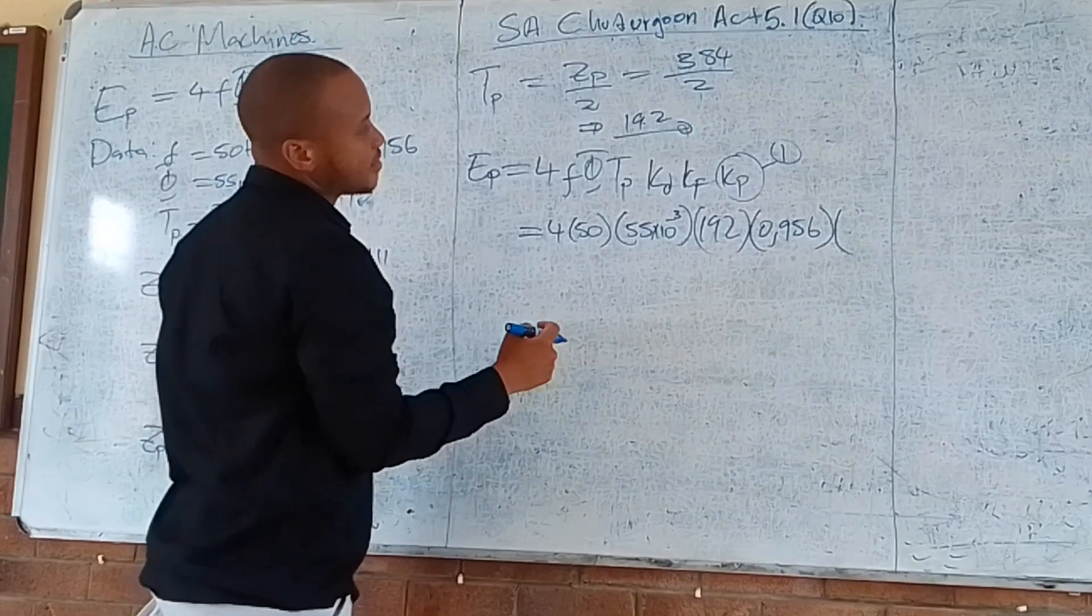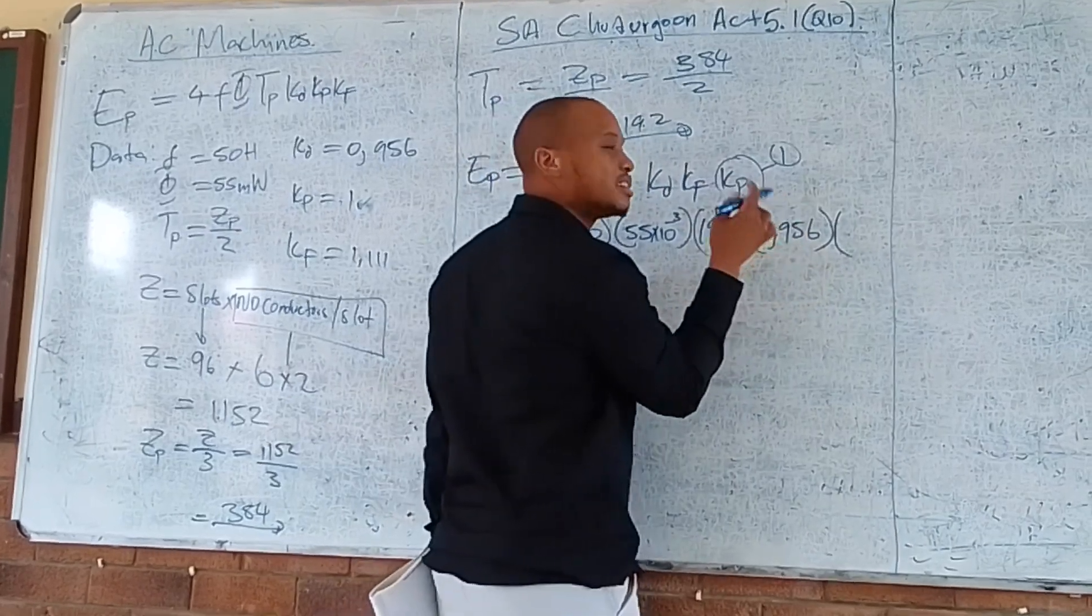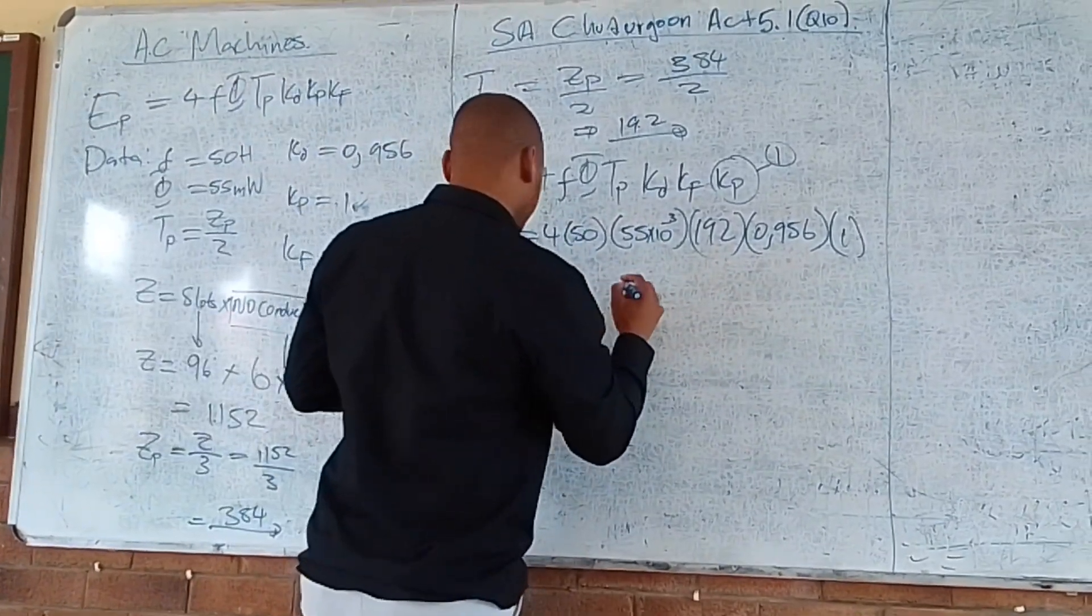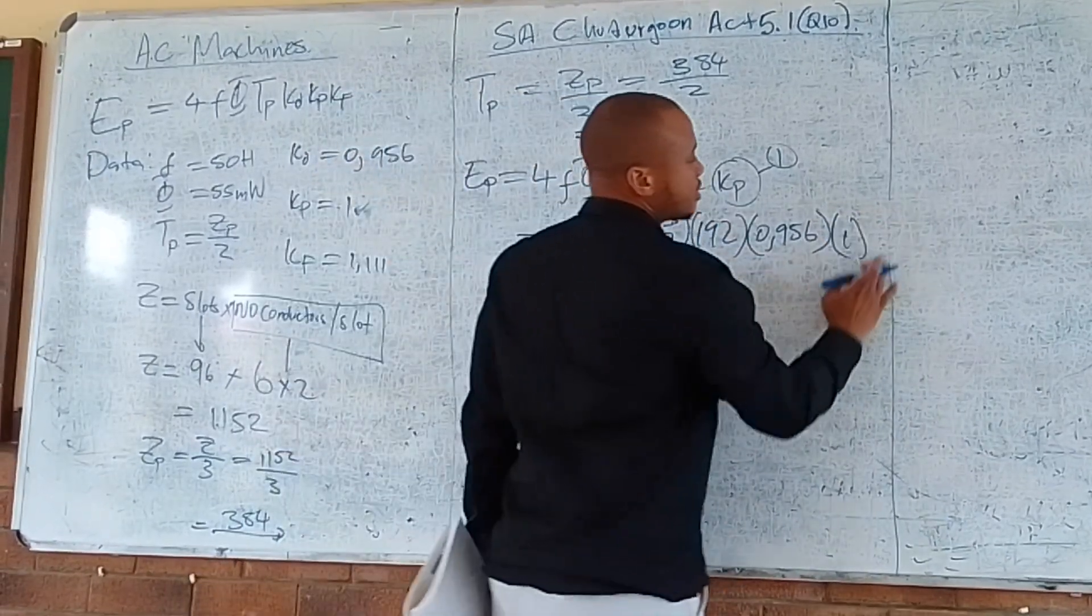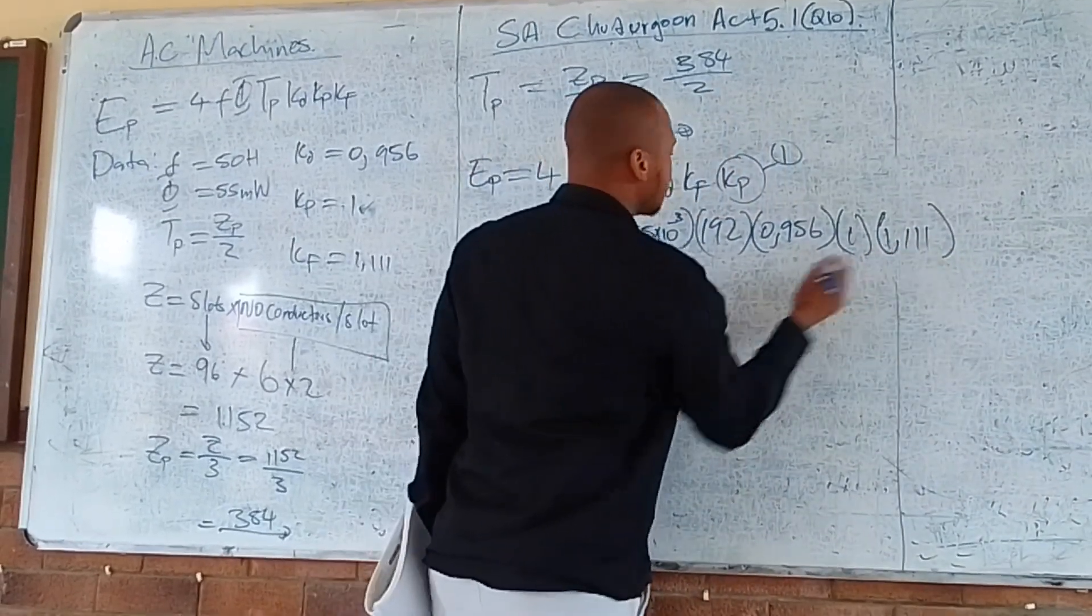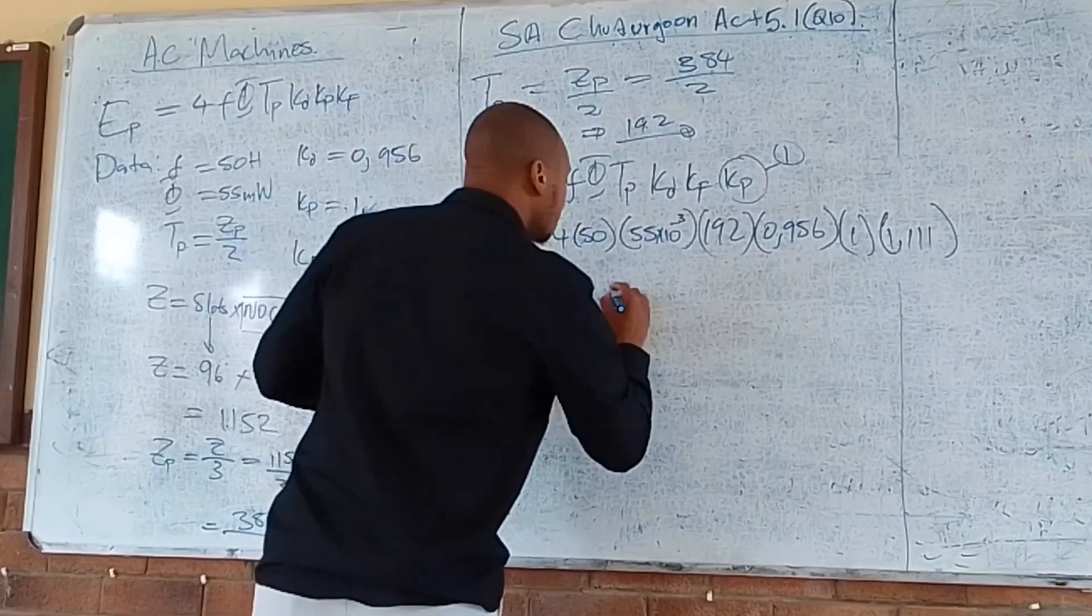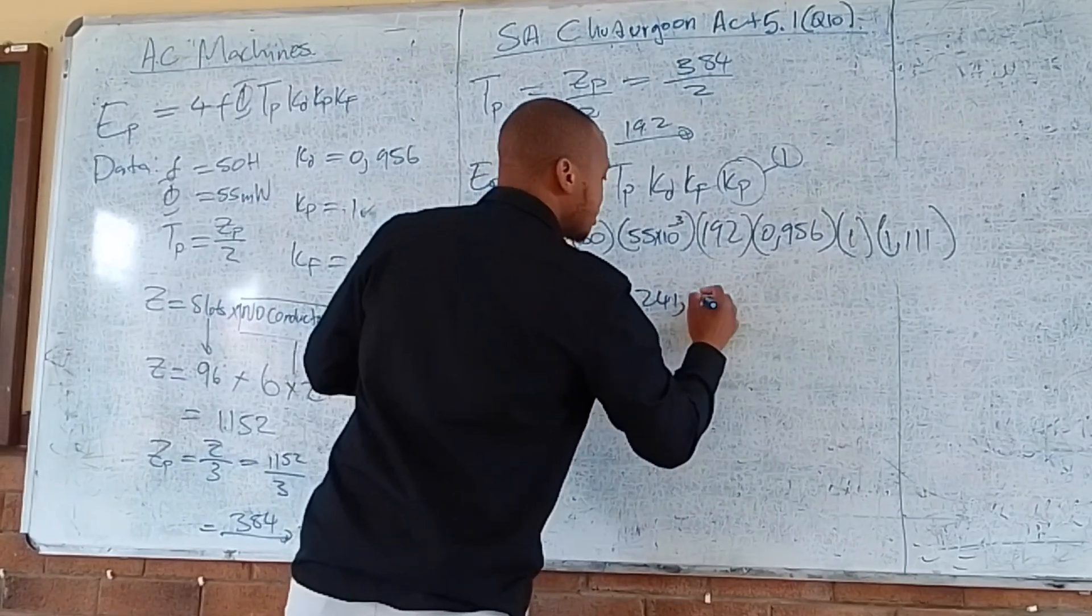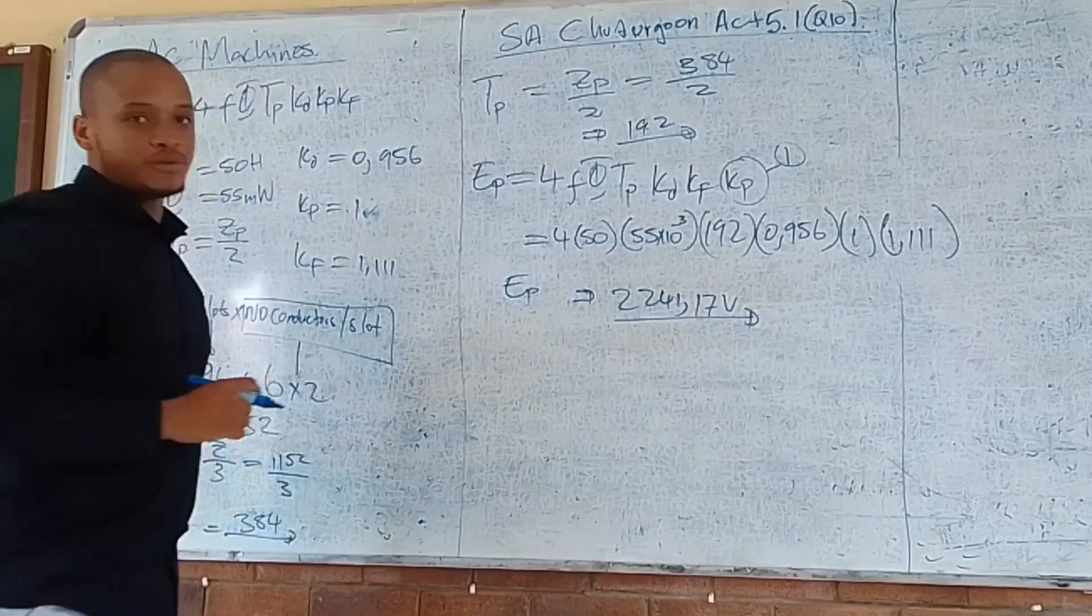If you punch all of these values in the calculator, you will end up with the following result: 22,041.75 volts. That is the generated voltage per phase.